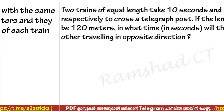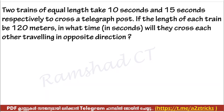Two trains take 10 seconds and 15 seconds respectively to cross a telegraph post. If the length of each train is 120 meters, in what time in seconds will they cross each other traveling in opposite direction? Working through: each train's speed is found from its length divided by its crossing time, then combined for opposite-direction crossing.